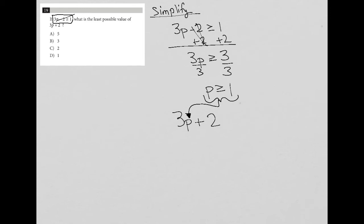So if p is greater than or equal to one, that means it can be one, two, three, so on and so forth, right out into infinity. But the smallest number p can actually equal is one. So I'm going to use that number when I plug in.